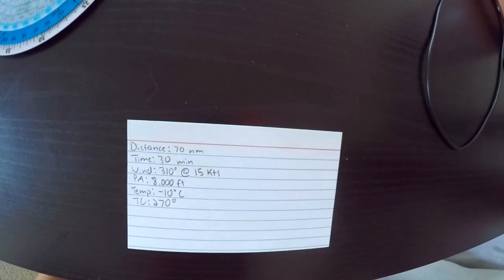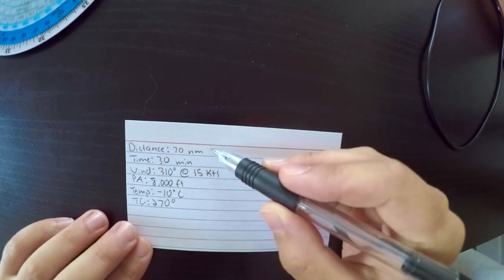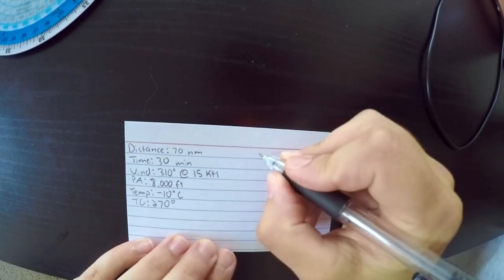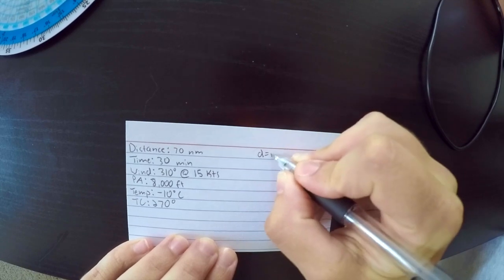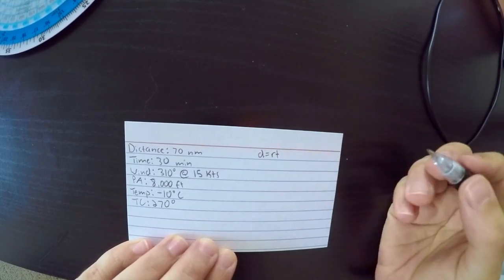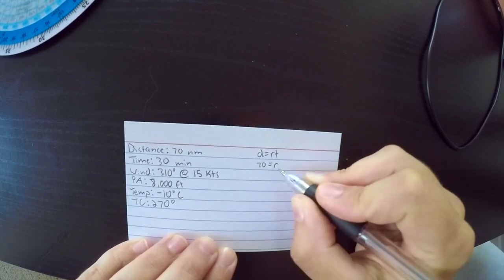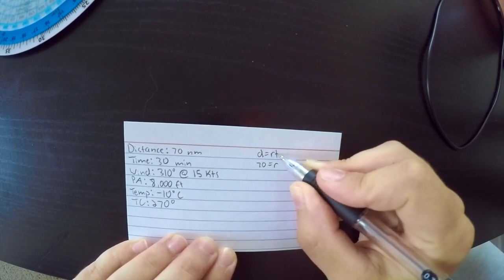The first thing we're going to do is find our ground speed. Your ground speed is just how fast you travel over the ground. So they gave us distance, 70 nautical miles, and they gave us a time of 30 minutes. So you're just going to use the formula distance equals rate times time, so D equals RT, to find your ground speed. So 70 equals R, which is our rate or ground speed, times T.